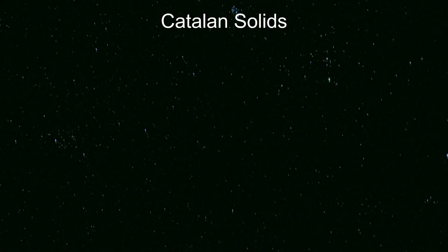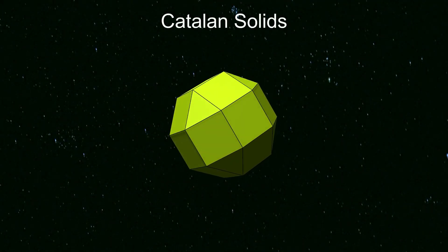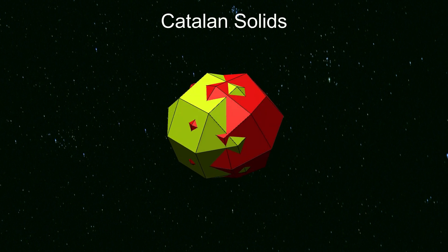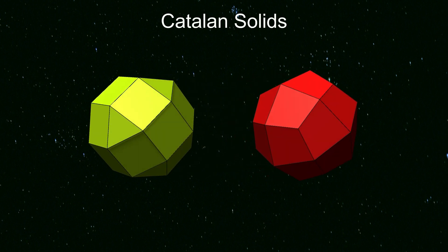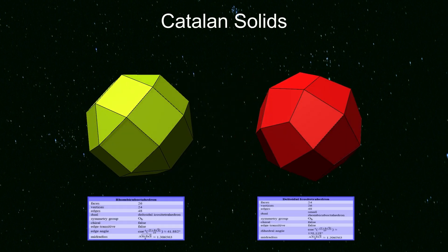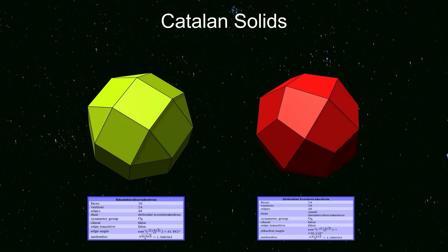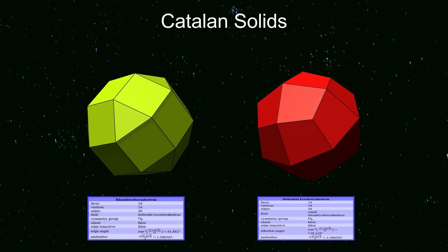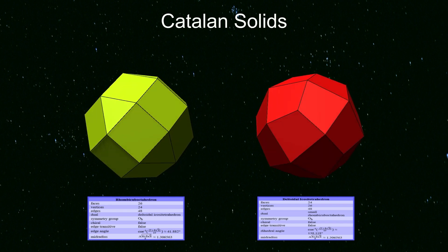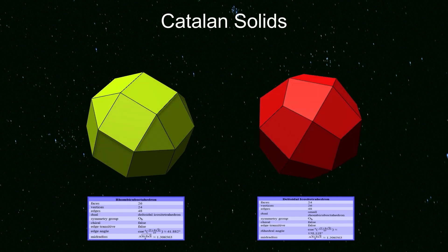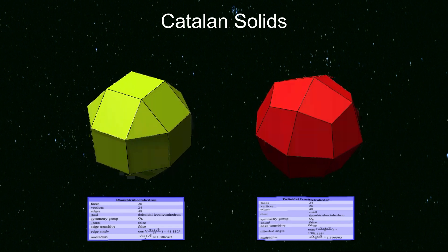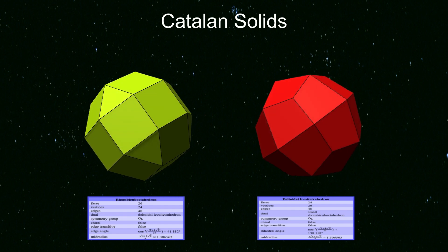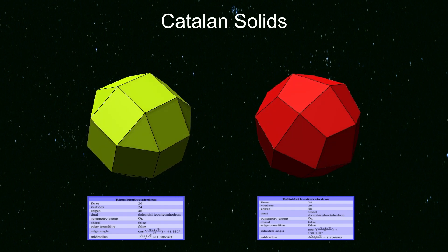Comparing the metrics for an Archimedean solid and its Catalan dual — such as this rhombicuboctahedron and deltoidal icositetrahedron — there are a lot of similarities. The number of edges, symmetry group, chirality, edge transitivity, and mid-radius are the same. Number of faces and number of vertices are swapped. And the dihedral angle of the Catalan solid and the edge angle of the Archimedean solid are supplementary angles — they add up to 180 degrees.